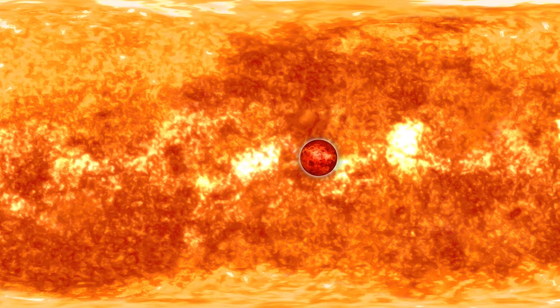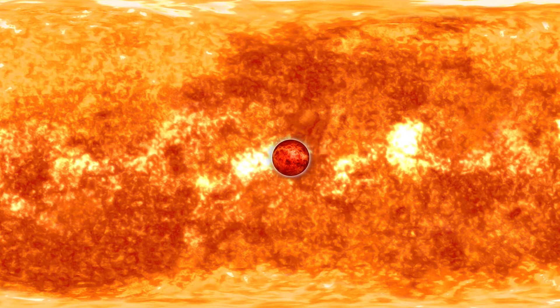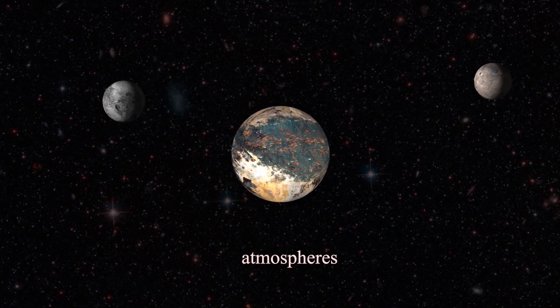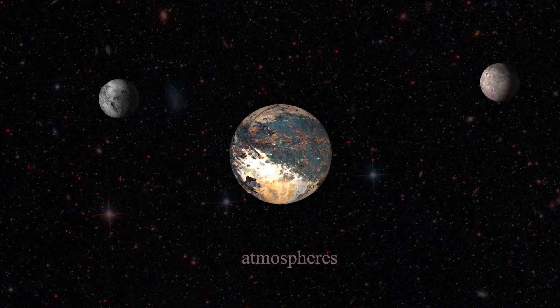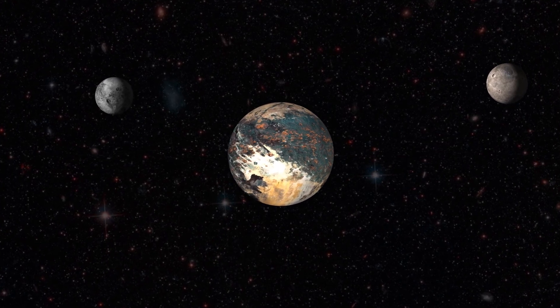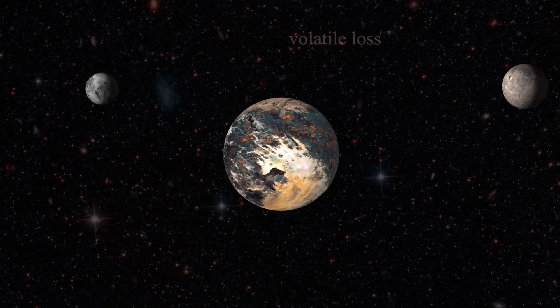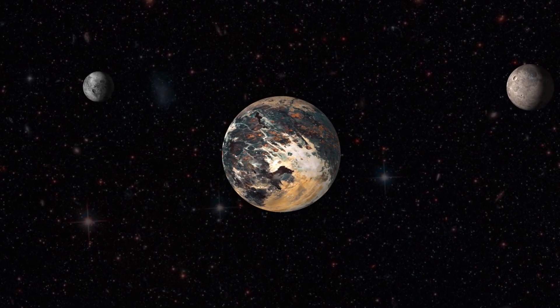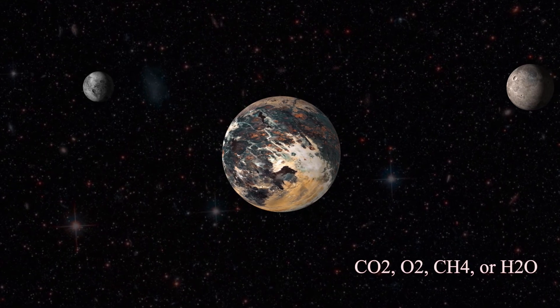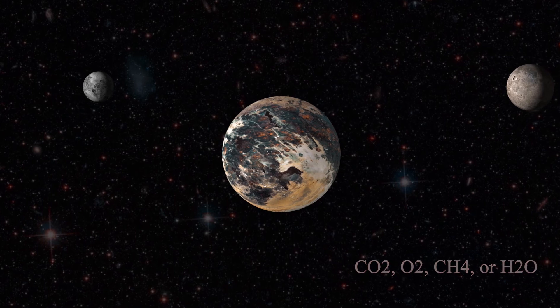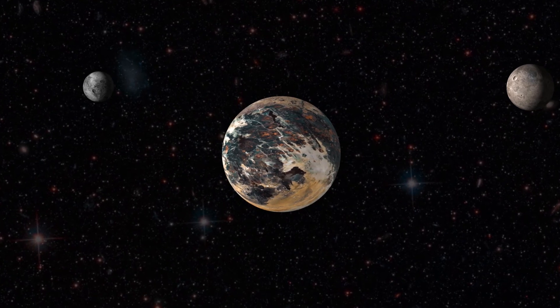TRAPPIST-1 is now a late type M dwarf star. This means that due to high stellar activity, the early atmosphere suffered considerable volatile loss. For instance, hydrogen loss. As a result, a hydrogen-dominated atmosphere is likely not the case. Rather, a carbon dioxide, dioxygen, methane, or water-dominated atmosphere is more likely.